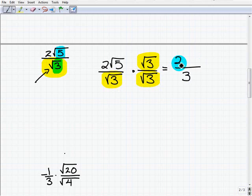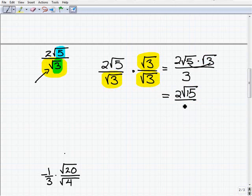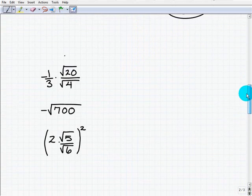And now we're left with 2 times radical, let's write it this way, 2 times radical 5 times radical 3. And that's going to be 2 times, here we just simply multiply these numbers, the square root of 15 over 3. And there you go. So moving on.